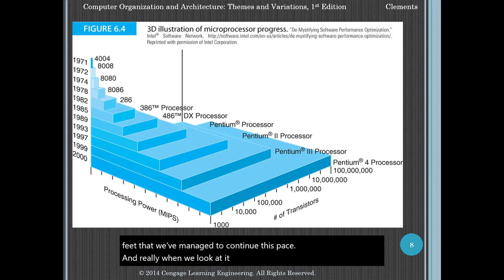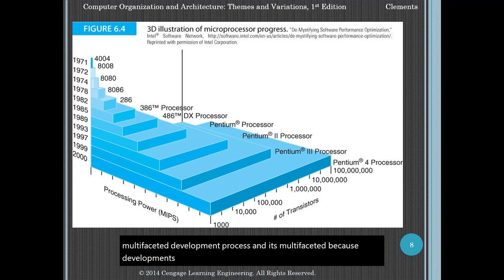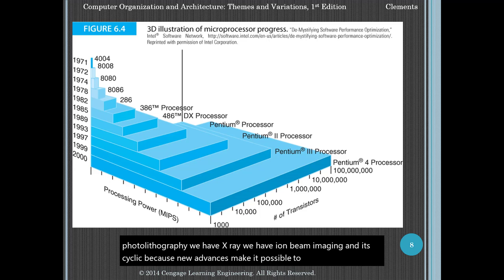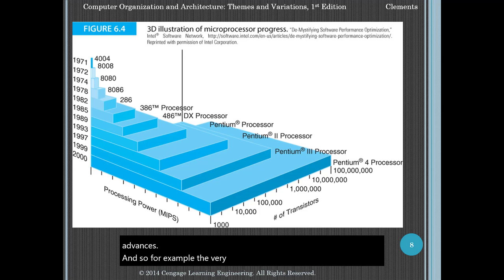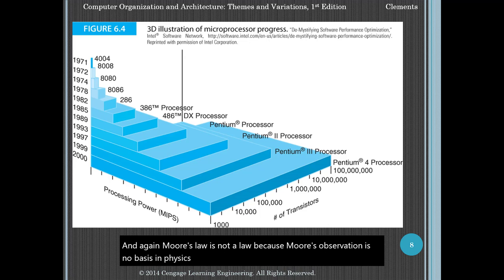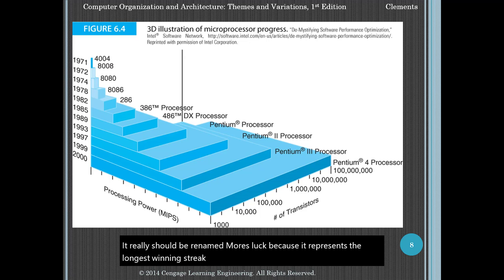This represents the triumph of a cyclical and multifaceted development process. It's multifaceted because developments in all aspects of semiconductor technology are taking place — materials, purification, photolithography, x-ray, and ion beam imaging. It's cyclic because new advances make it possible to create more advances. The very first chips were designed and laid out by human engineers; today, design, testing, layout, and verification are all performed by computer-aided design. Moore's Law is not a law because Moore's observation has no basis in physics or natural laws. It really should be renamed Moore's Luck, because it represents the longest winning streak in history. The term was coined as such an observation, and consequently it continued.